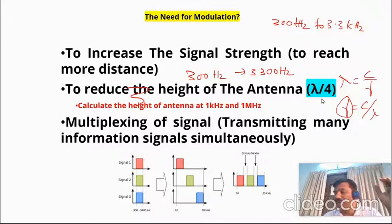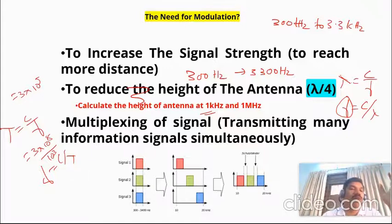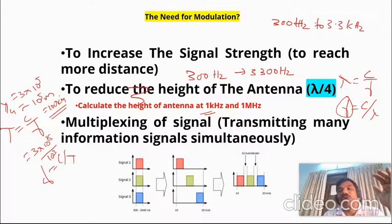For example, if f equals 1 kHz, then lambda = c / f = (3 × 10^8) / (10^3) = 3 × 10^5 meters. Lambda by four is approximately 10^5 meters, which is almost equal to 100 kilometers. So if you are using 1 kHz as the transmission frequency, the required antenna height is 100 km — that is completely impractical.